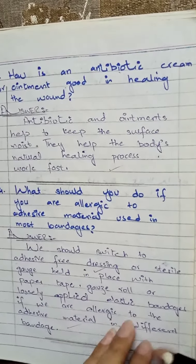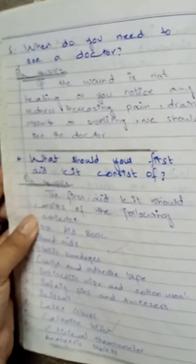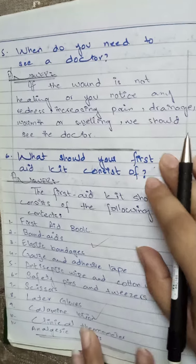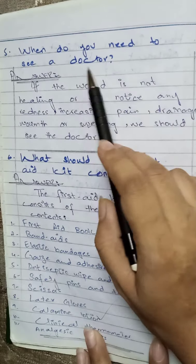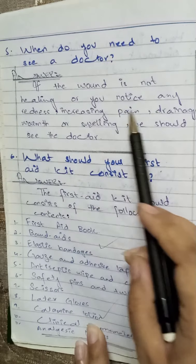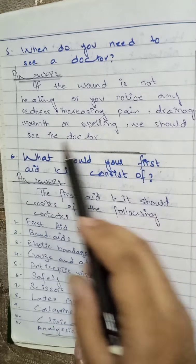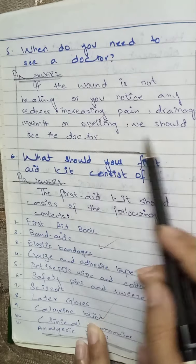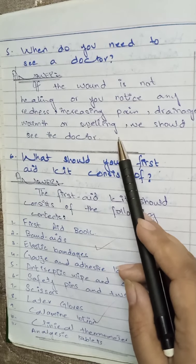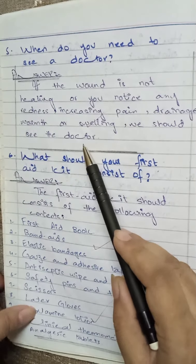Question number five: When do you need to see a doctor? If the wound is not healing, or you notice any redness, increasing pain, drainage, warmth, or swelling, we should see a doctor. So if we have such symptoms or signs on our wound, we have to visit our doctor.